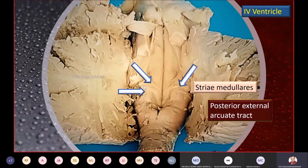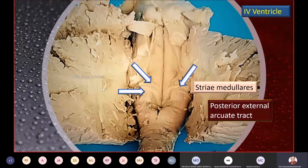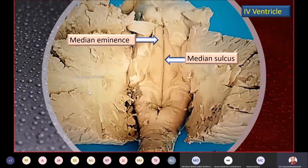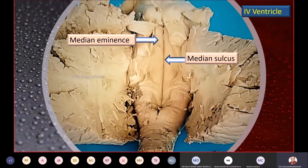There is a ridge of white fibers called the taenia medullaris — that is nothing but the posterior external arcuate fibers. There is also a median sulcus — a vertical shallow fissure dividing the floor. On either side of the median sulcus in the floor of the fourth ventricle are two long elevations running almost end to end — that is the median eminence.